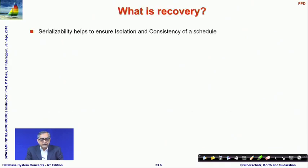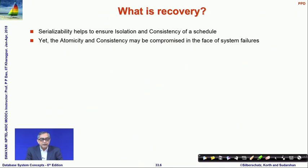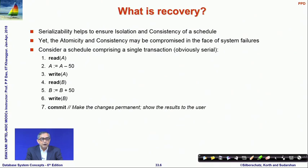Serializability significantly helps us achieve isolation and consistency of a schedule — two of the ACID properties. Yet atomicity and consistency may be compromised if there is a system failure. Consider a transaction where 50 dollars is transferred from account A to account B. We first read and debit account A, then read and credit account B, and the seventh instruction is commit, which makes the changes to A and B permanent.